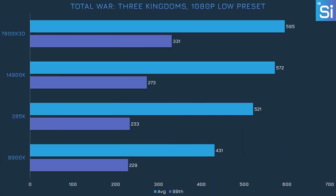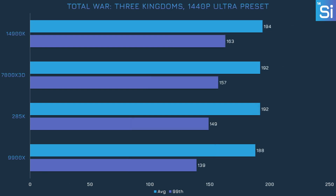For our gaming benchmarks, first up is Total War: Three Kingdoms at 1080p, and the 7800X3D takes a decent lead over the 14900K and the 285K. The 285K can't quite match the 14900K, though it is at least ahead of the 9900X. When cranking up the settings, the CPUs end up with largely similar performance, but the 14900K ends up on top thanks to its good 99th percentile frame rate. The 285K doesn't impress though.